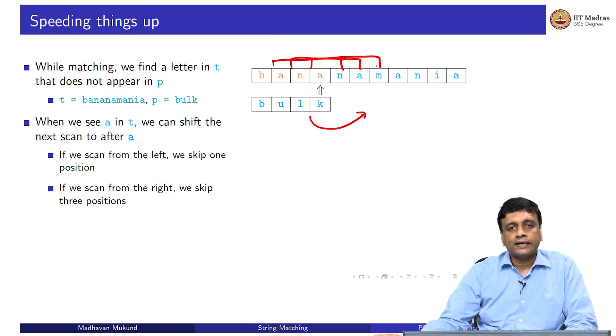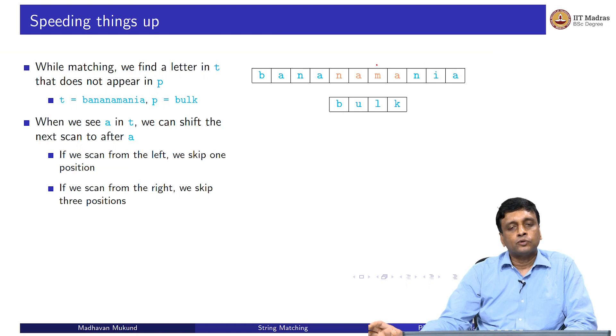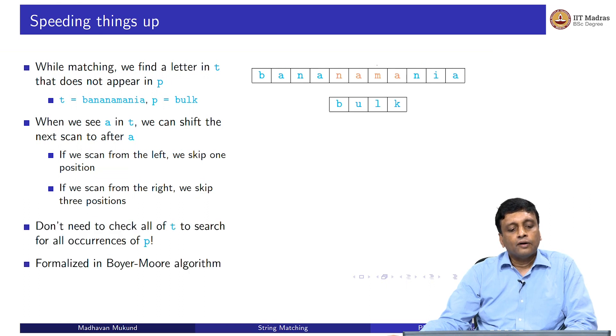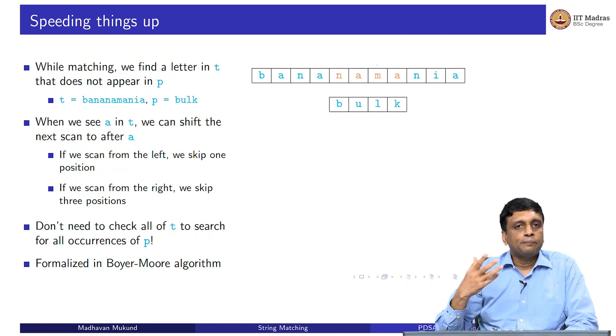And if I overlap an A, it cannot match my pattern, because my pattern does not have an A anywhere. In this case, I would actually shift it to the right by three positions rather than by one position. Therefore, we could have a faster skipping if we are using this kind of a heuristic to speed up our search, because when we see a letter which is in our text, but not in our pattern, then we can actually fast forward in some sense the scan. This is one special case of what is an optimization called the Boyer-Moore algorithm, which we shall look at next.